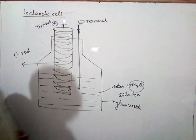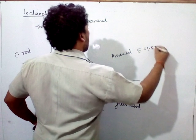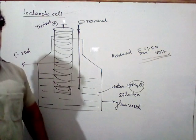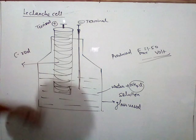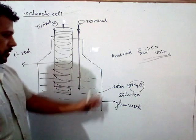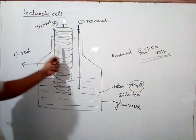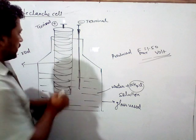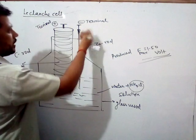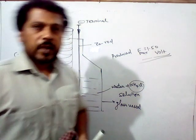This cell produces a maximum of 1.5 volts. The solution is a mixture of water and ammonium chloride. The carbon rod immersed in it works as the positive terminal, and the zinc rod immersed in the same solution works as the negative terminal. So, this is the Leclanche cell and it produces a maximum potential of 1.5 volts.